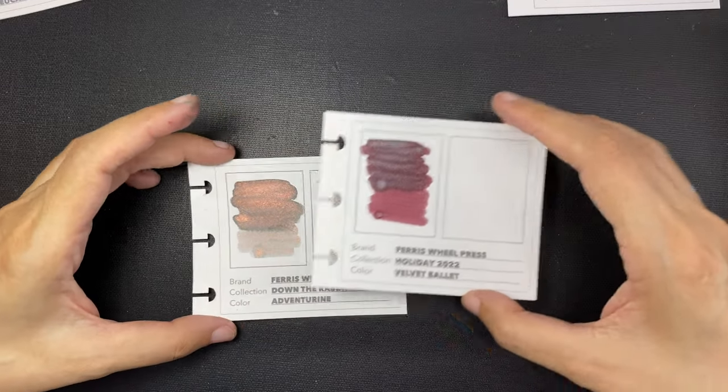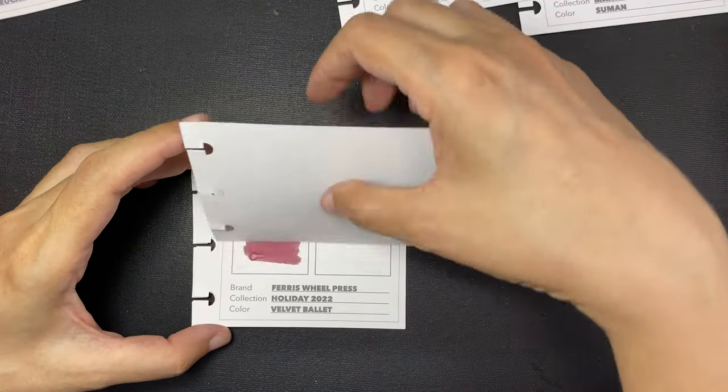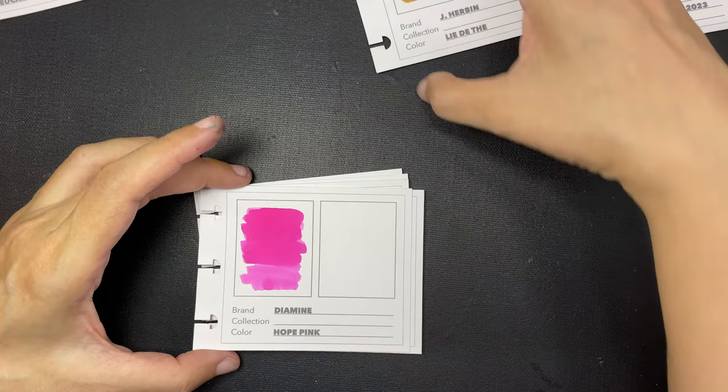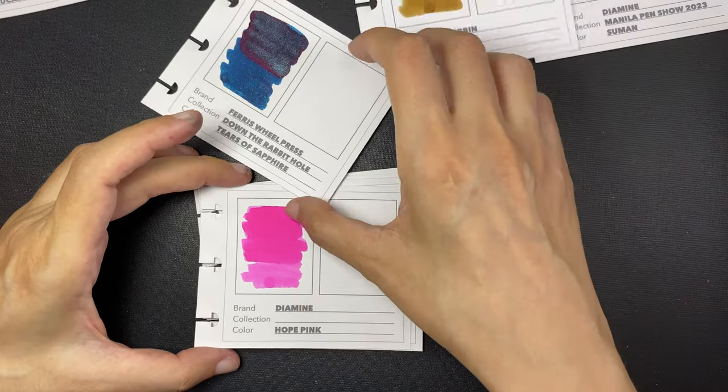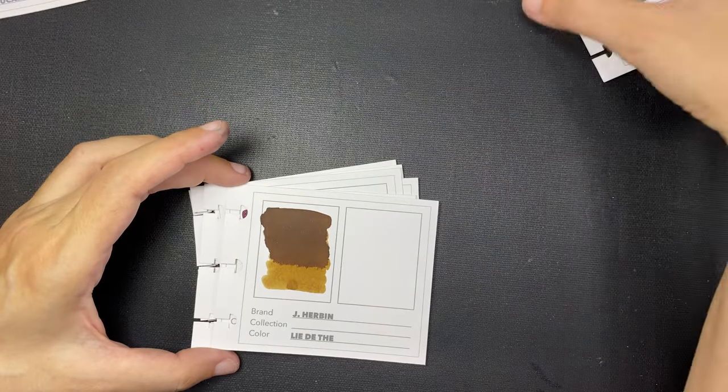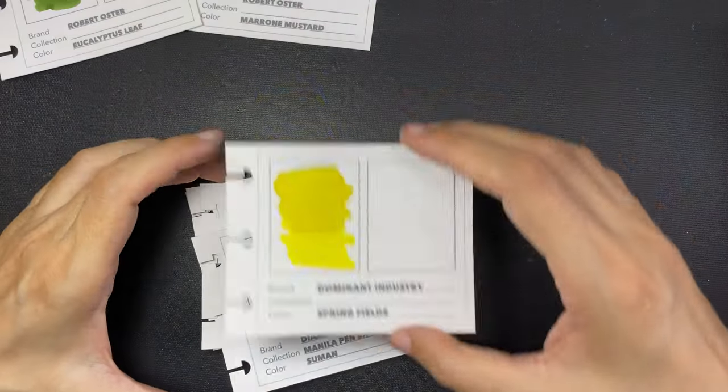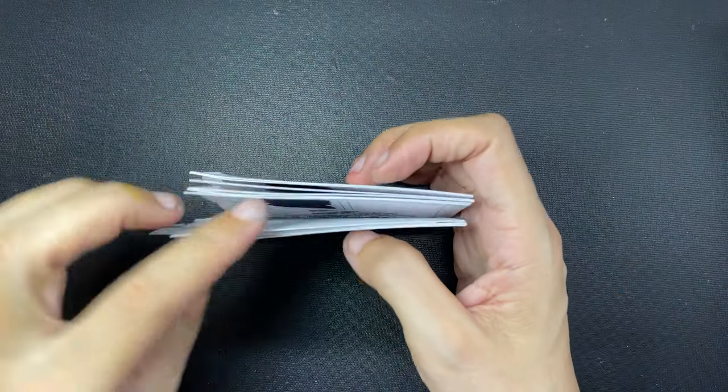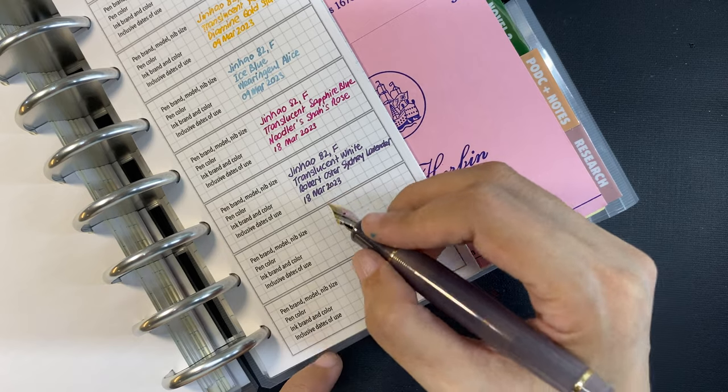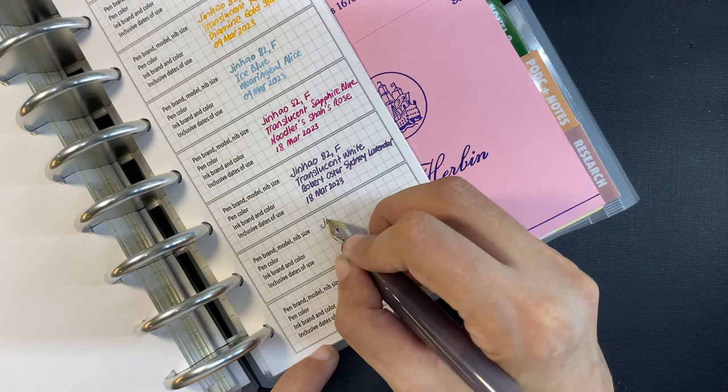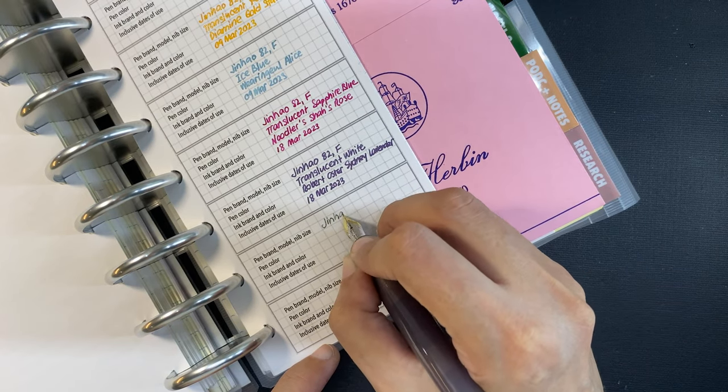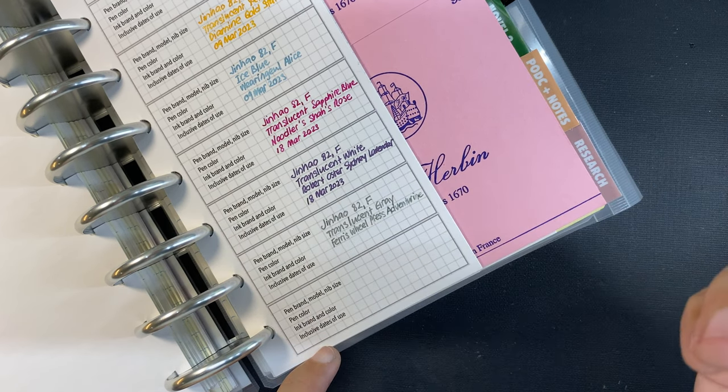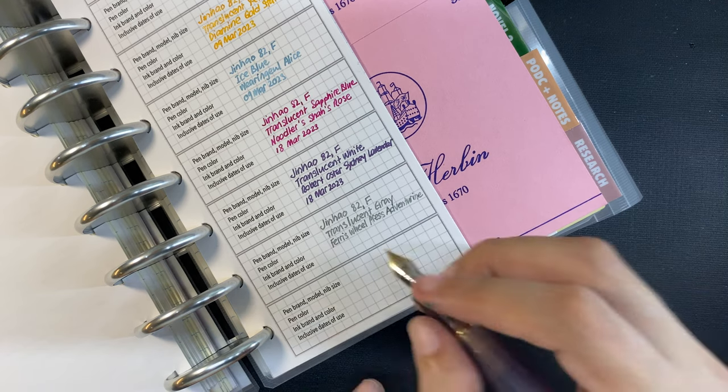And I do plan to stop buying any more sample ink vials because I already have so, so much. And I also plan to embark on a monthly challenge for myself with the goal of using up all of the inks that I already have. But that will be the subject of a different video. And now I can finally write down this pen and ink combination in my tracking sheets for pens and inks in use. I talked about these tracking sheets in my video about my return to journaling, and I will link it down below.